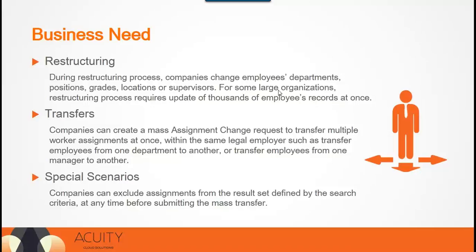The Mass Assignment feature is useful for large organizations because the restructuring process requires updating thousands of employees' records at once. The search feature for mass assignment allows the user to exclude employees they don't want to include in the mass update. At any time before submitting the mass transfer, companies can exclude assignments from the results. For example, to transfer selected employees to a new supervisor, companies can select all employees working for a supervisor, or select all except one or two.